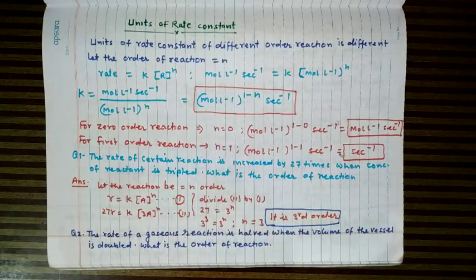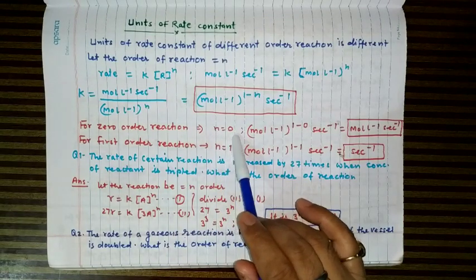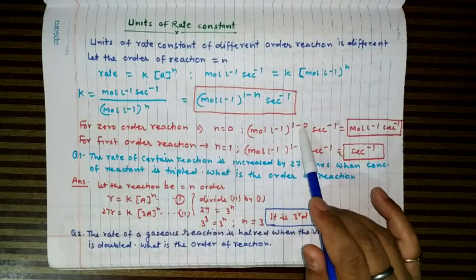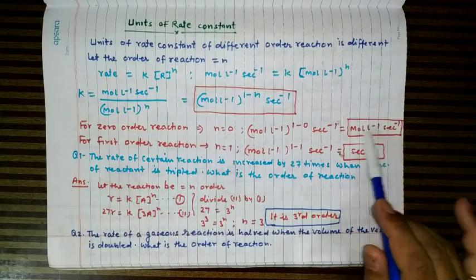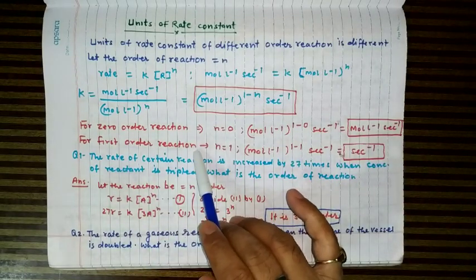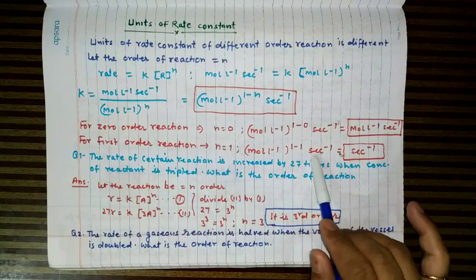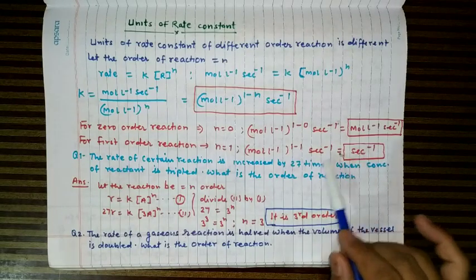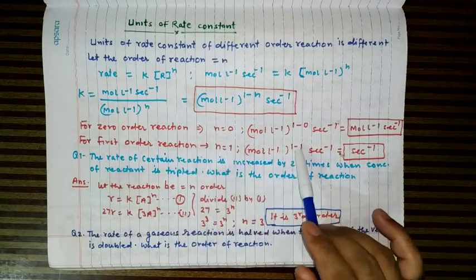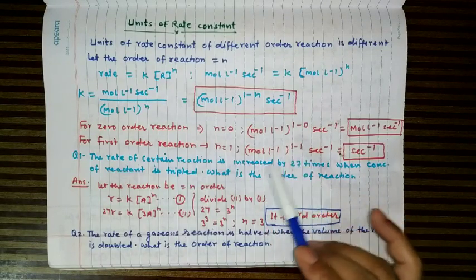This is the general expression to find the unit of rate constant for any order reaction. For zero order (n=0): mol/L^(1−0) per second = mol/L/s. For first order (n=1): mol/L^(1−1) per second = per second (or per hour, per minute). For second order (n=2): mol/L^(1−2) per second = L/mol/s.